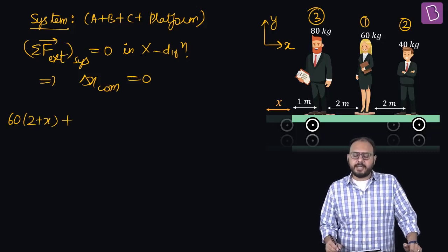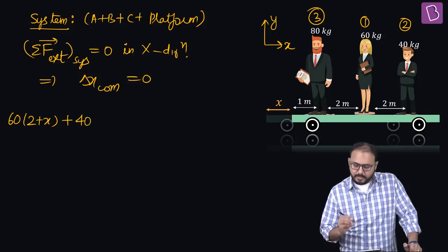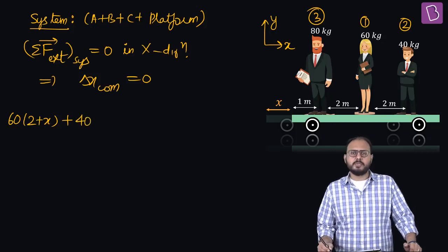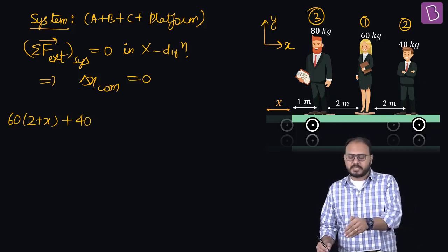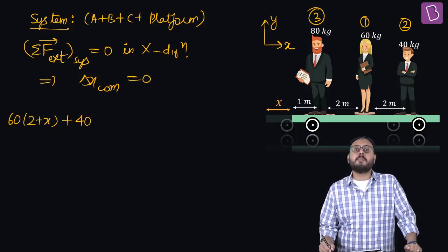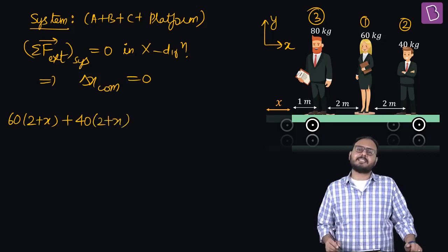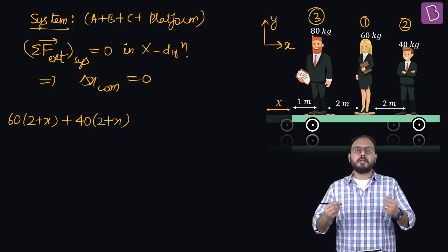Then comes the guy on the right. 40 kg. How much did the guy on the right move? He was in the second position before, now he's at the third, so 2 to the right. Wrong - 2 is on the platform. How much did the platform move? x.